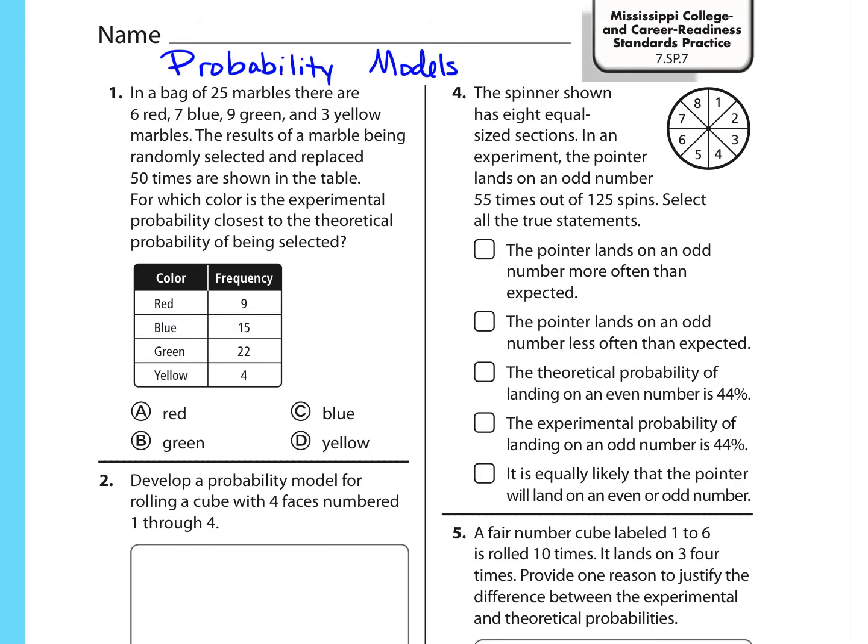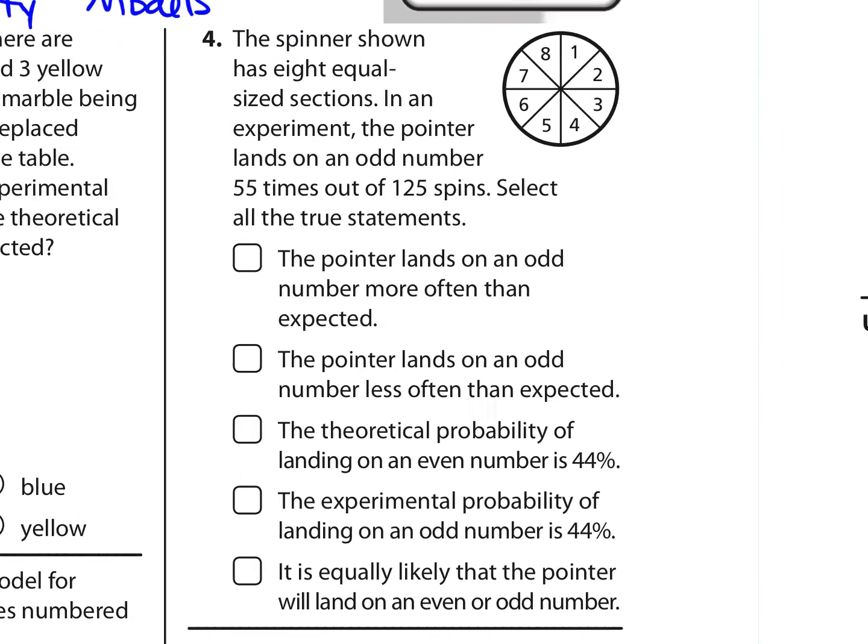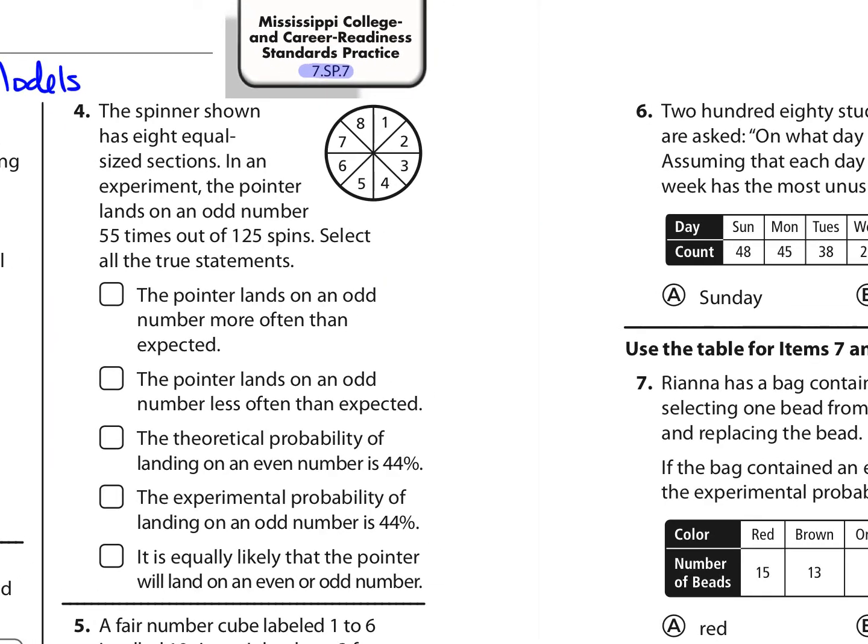Standard 7, SP7, is about probability models, and really, we're just looking at models and answering questions about them. So starting with problem 4, it says the spinner shown has 8 equal-sized sections. In an experiment, the pointer lands on an odd number 55 times out of 125 spins. Select all the true statements.